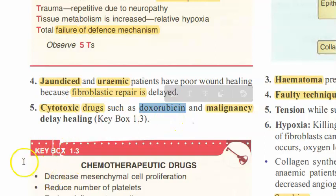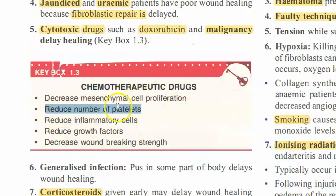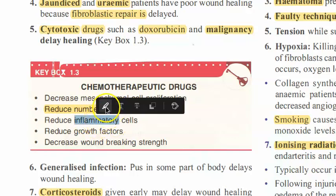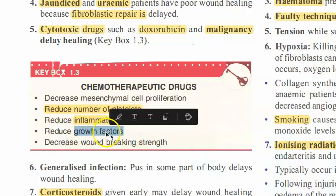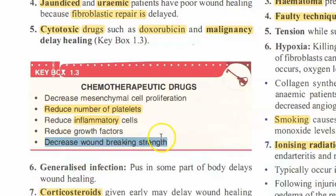Cytotoxic drugs like doxorubicin — a chemotherapy drug used in malignancies — also cause delayed wound healing. Chemotherapy drugs reduce the number of platelets needed for clot formation and hemostasis. They also reduce inflammatory cells like mast cells, histamine, and prostaglandins that attract macrophages and neutrophils for scavenging. Additionally, they reduce growth factors needed for collagen production and decrease wound breaking strength.